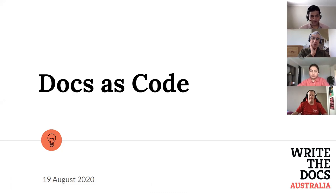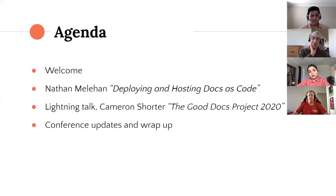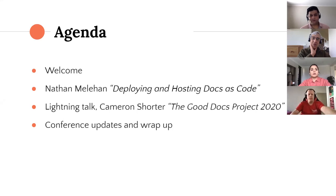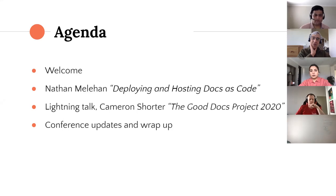I'm not sure if Nathan's in the call yet, but I'll get started on an introduction of what we have planned for today. Docs as Code is the central theme of our event. Nathan's going to talk about how to deploy and host Docs as Code. Then we've got a lightning talk by Cameron Shorter, who's working on the Good Docs Project. And we also have some updates on our conference coming up this December.